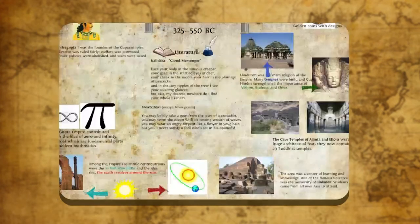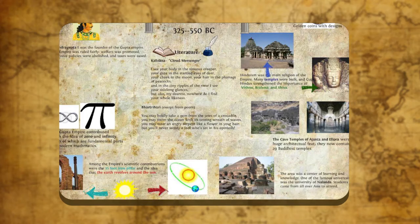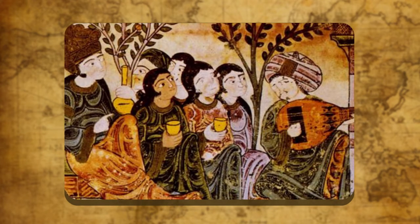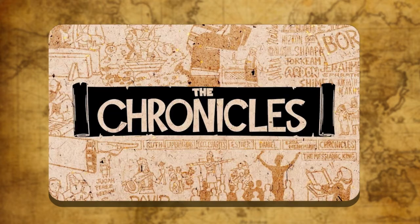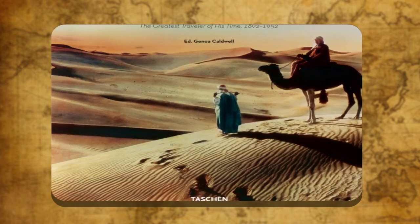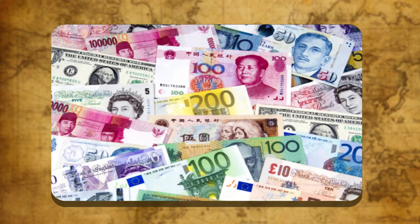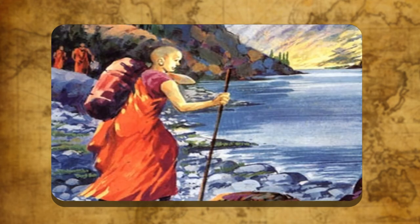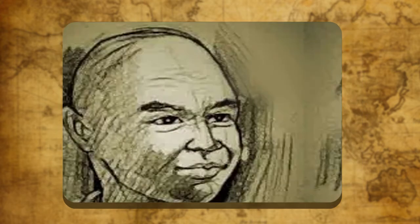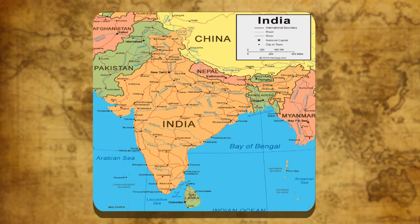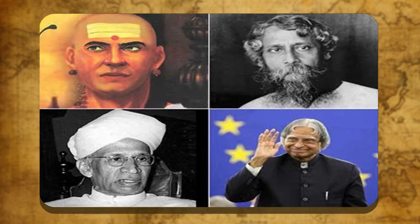Secular literature is literature that is not religious. Secular literature includes poetry, drama, memoirs, chronicles, travelogues and accounts of foreign travellers. The Chinese pilgrims like Fahien, Huyen Tsang and I-tsing visited India in search of knowledge and Buddhist literature, and left valuable accounts about the religions, social and political conditions of India.